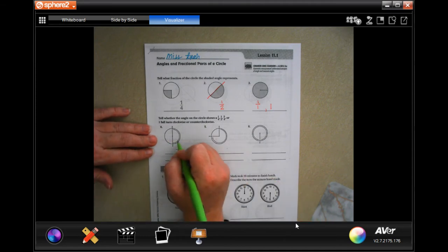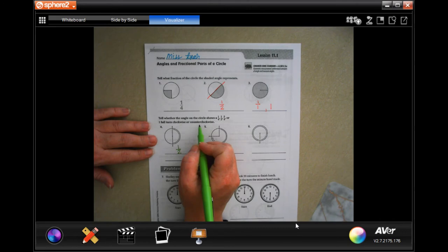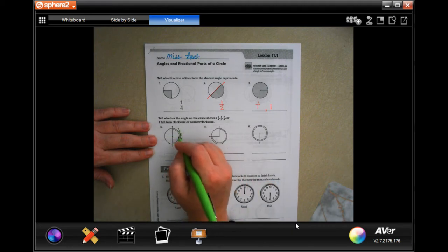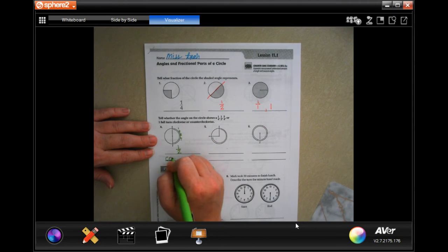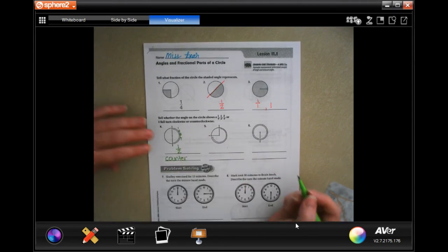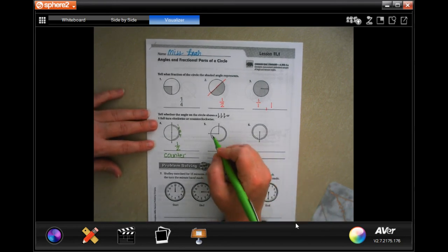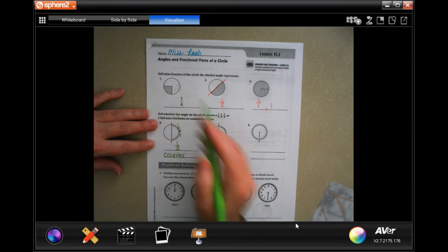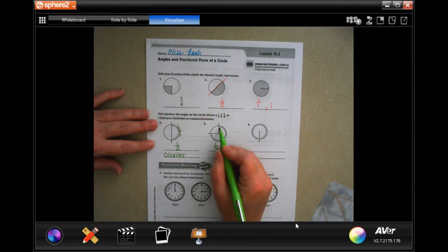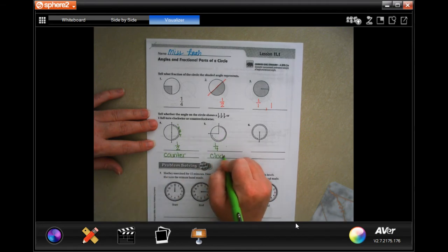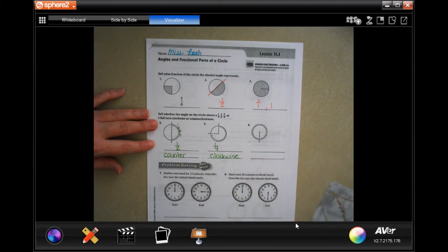It wants to know clockwise or counterclockwise. Clockwise goes in order of the numbers, so we would have one, two, three, four, and keep going this way. Going the other way is called counterclockwise. This one looks like it's a quarter, just like this one, it's only a triangle of it, and it's going in the order of where the numbers would be, so it's going to be clockwise.